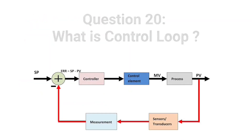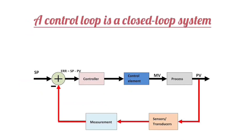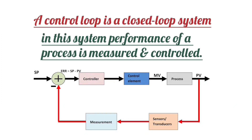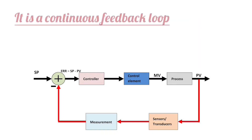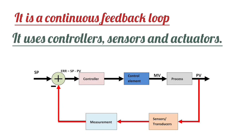Question 20: What is a control loop? A control loop is a closed loop system in which the performance of a process is measured and controlled. It is a continuous feedback loop that uses controllers, sensors, and actuators.